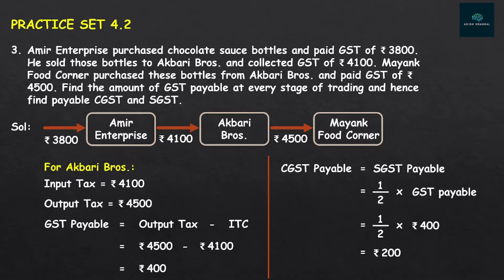After Akbari Brothers, we look at Mayank Food Corner. Mayank Food Corner only purchases — there is no selling after this — so we cannot find GST Payable for Mayank Food Corner. So our question ends here, and that is how at every stage of trading we found GST Payable, CGST Payable, and SGST Payable.